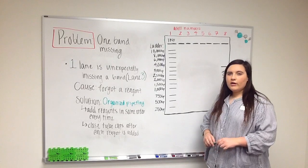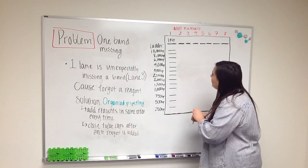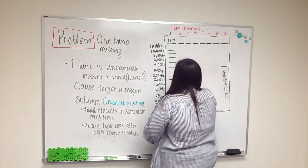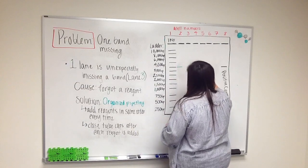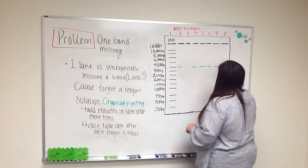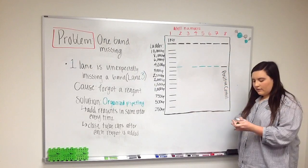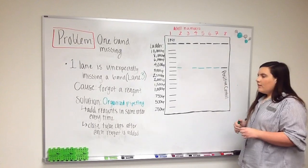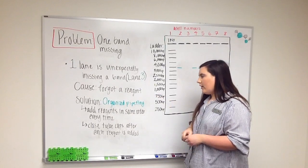The next problem we're going to be discussing is when one band is missing from the gel. How the gel would look is that you would get amplification of the bands that you expected at around 4,000 base pairs, similar to the positive control, but for some reason in lane three you're unexpectedly missing a band. This could be because you might have forgotten a reagent, which happens to all of us at some time or another.